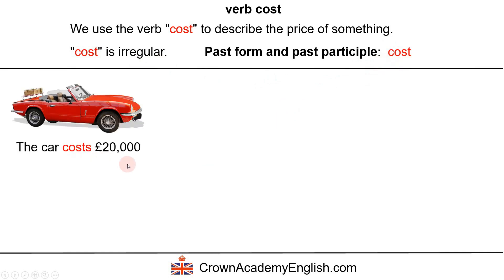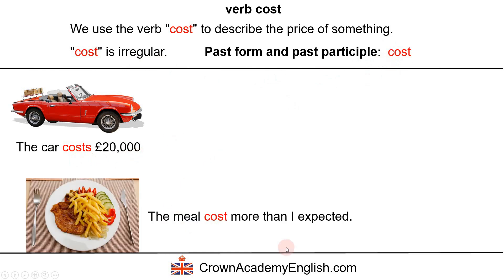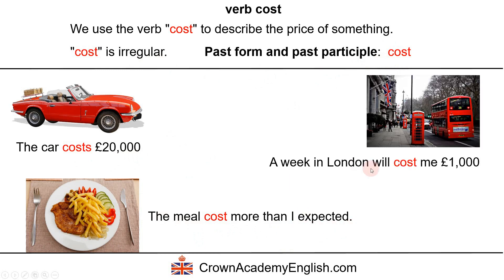The car costs 20,000 pounds. The meal cost more than I expected — this is the past simple tense of cost. A week in London will cost me 1,000 pounds — here we are using the future simple tense of cost, describing the price in the future.